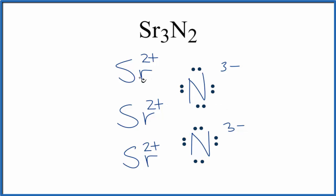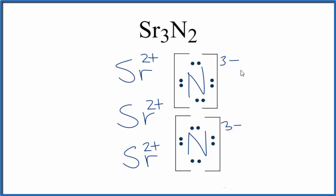And we want to show that those electrons were transferred. They're not shared like in a covalent bond. Since they're transferred, let's put brackets around each nitrogen. So this is the Lewis structure for Sr3N2, strontium nitride.